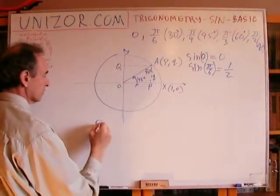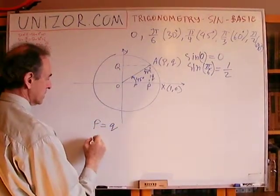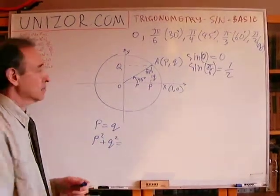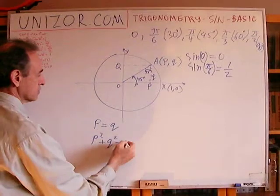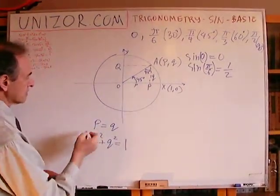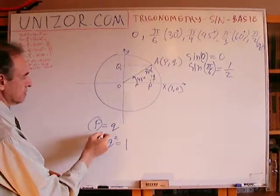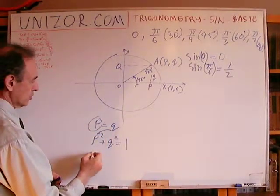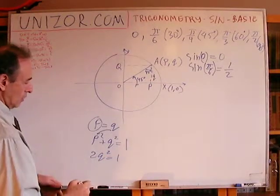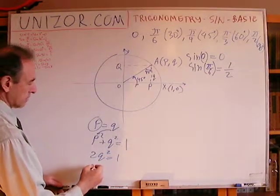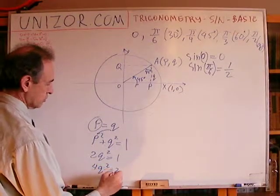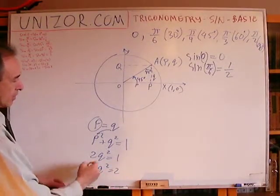Now, if P is equal to Q, and P squared plus Q squared, which is a Pythagorean theorem, is equal to square of hypotenuse, which is 1, well, we are interested in Q, right? So we can substitute Q instead of P. We will have 2Q squared is equal to 1, or let's multiply it by 2. It's 4Q squared is equal to 2 because I want to have a nice square root.